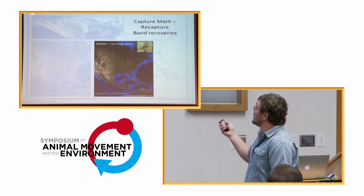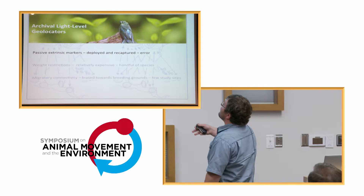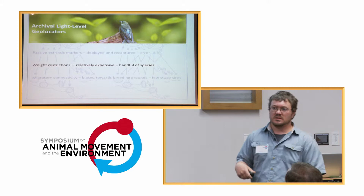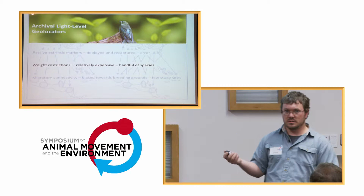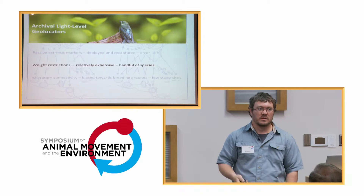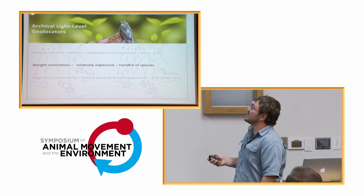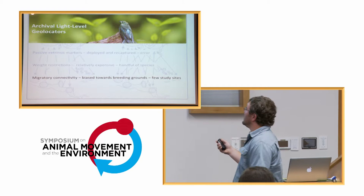Geolocators are our best bet for these small birds. They're passive extrinsic markers — birds wear them as backpacks. They need to be deployed and then recaptured, and there's a fair amount of error. The Fish and Wildlife Service says less than five percent of body weight can be that backpack. They're relatively expensive — about $180 a piece — and have only been deployed on a handful of species, though that's increasing rapidly.